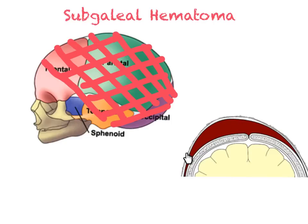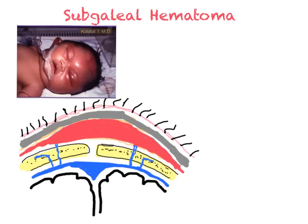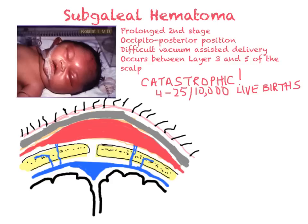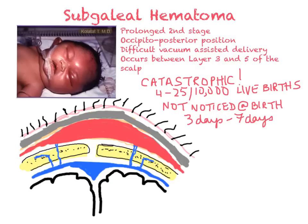Also note the ear-to-ear spread. The cause is the same as the other two hematomas — a difficult vacuum-assisted delivery or a prolonged second stage of labor, specifically in the occiput posterior position. A subgaleal hematoma can be catastrophic. The good news is that it is rare, occurring in 4 to 25 per 10,000 live births. Although present at birth, it is not initially noticed because it is so diffuse. It usually presents around three days to one week.